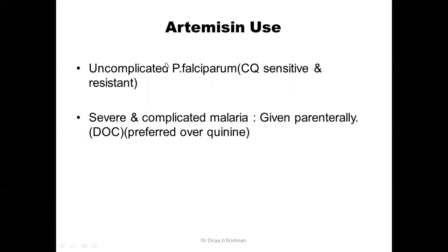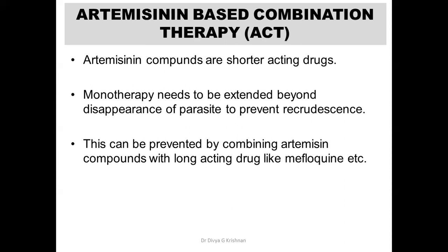Artemisinin is used both in uncomplicated malaria as well as severe and complicated malaria. For uncomplicated malaria it can be used even for chloroquine-sensitive as well as resistant cases of Plasmodium falciparum. For severe complicated malaria it is given usually by the parenteral route. We prefer artemisinin over quinine because quinine has some significant adverse drug reactions.